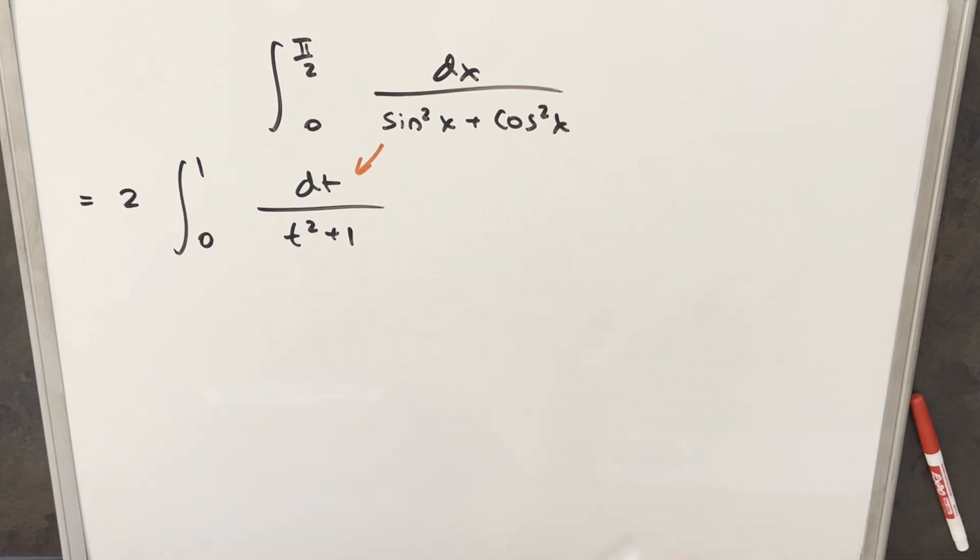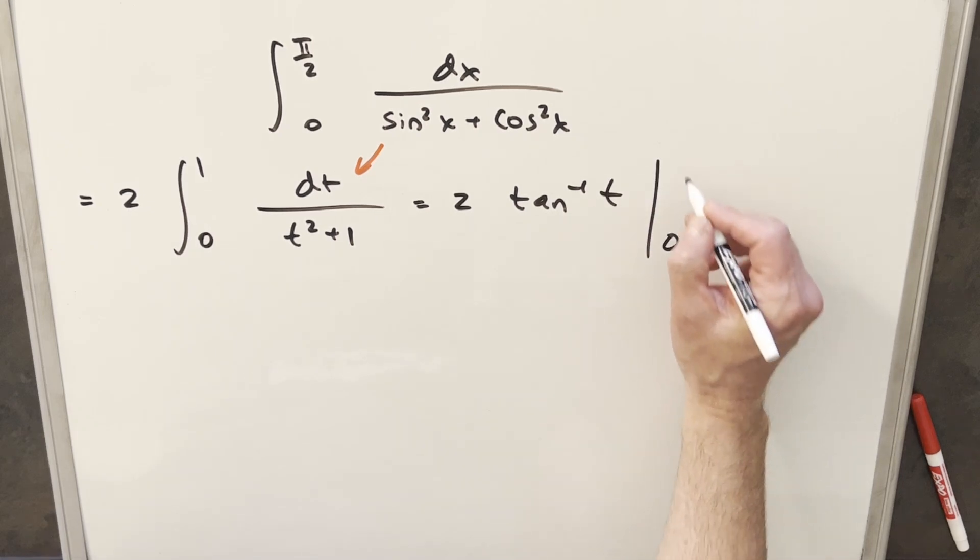This is just going to be arctan. So when we integrate this, we'll have our 2 out front. This is going to become just arctan of t and we just need to evaluate from 0 to 1.